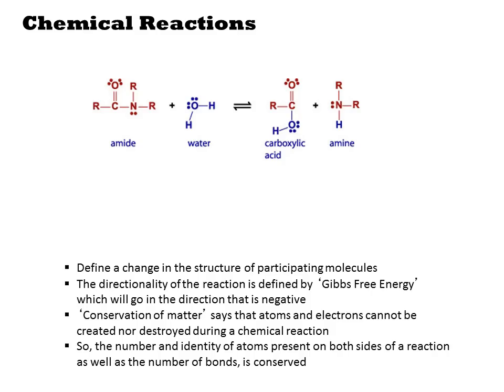When something happens in a biological system, it is ultimately being implemented as many chemical reactions. That is most obvious during the biosynthesis of chemicals, but it is also true when you, say, bend your arm. You are breaking oxygen-phosphate bonds in many ATP molecules and modifying the structural state of proteins within your muscle cells.